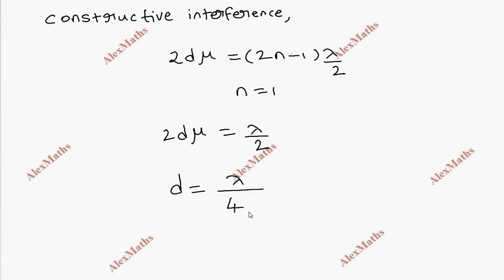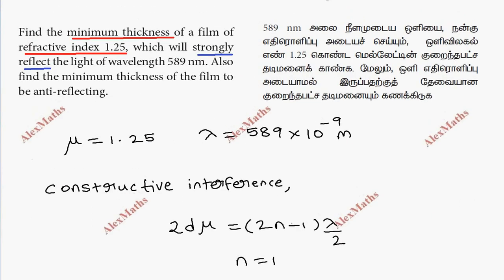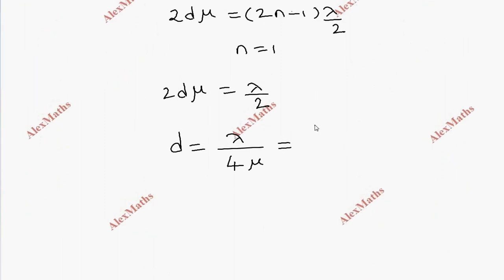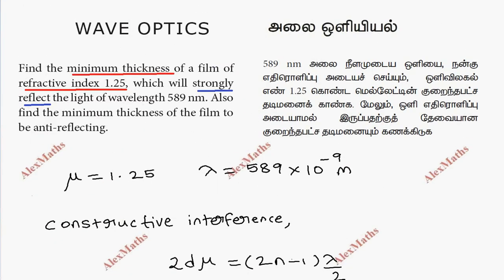Solving for d, we get d equals lambda by 4 mu. Substituting the values, lambda is 589 into 10 power minus 9 divided by 4 into 1.25. So this gives us the value of 117.8 into 10 power minus 9 meter. This is the value for strongly reflecting.